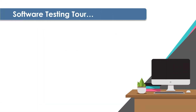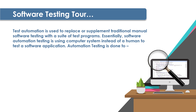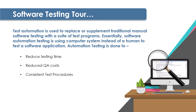We understand that the role of a manual tester is very important. However, at the same time we cannot ignore automation in our projects, as it helps in reducing testing time, reduced QA cost, consistent test procedures, better and improved testing productivity, and improving product quality. These are various advantages once any organization goes for automation testing.